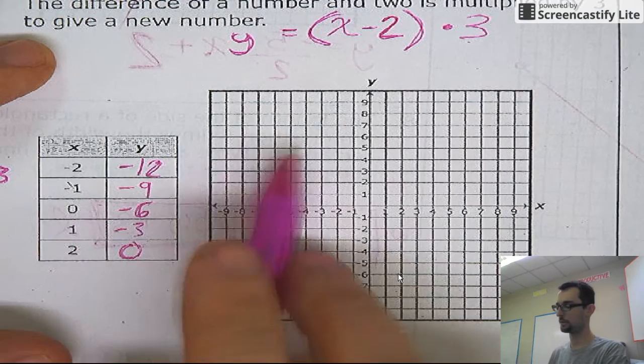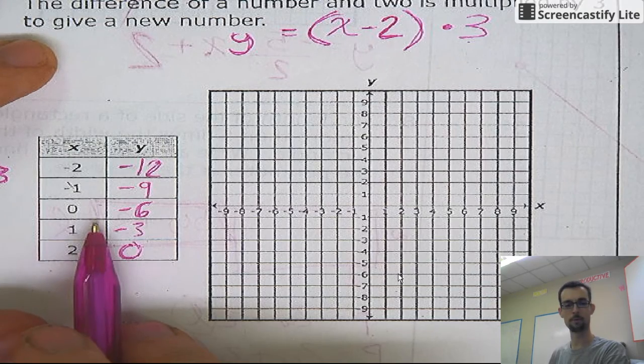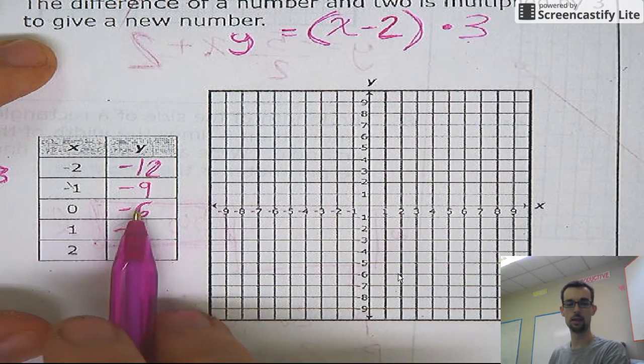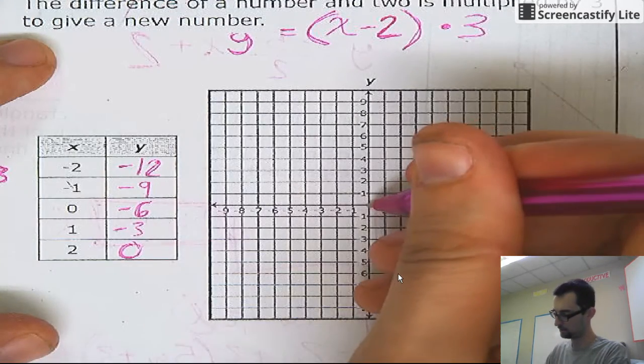You could plot the points. We haven't done this yet going from the equation though. So that'll be fun. I know my y-intercept is right here. It's zero, negative six. So let's see. Zero, negative six.